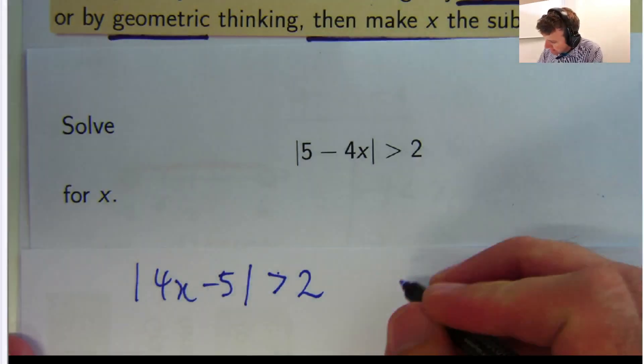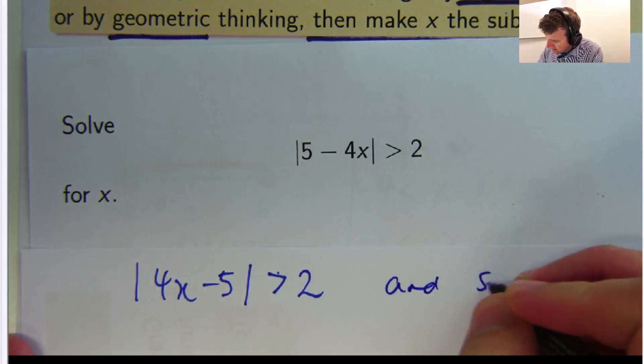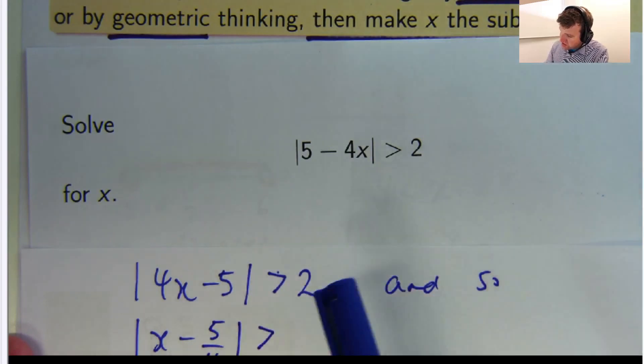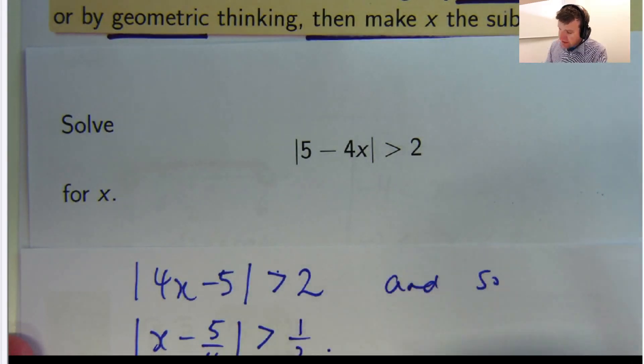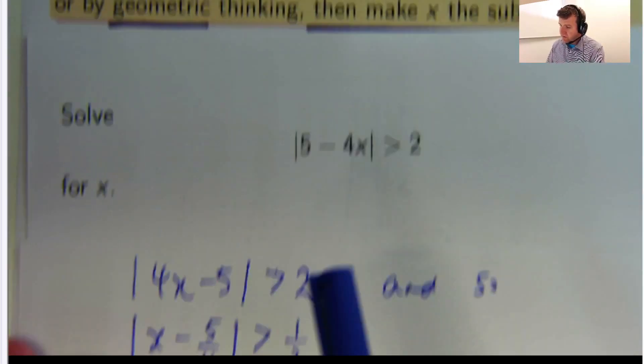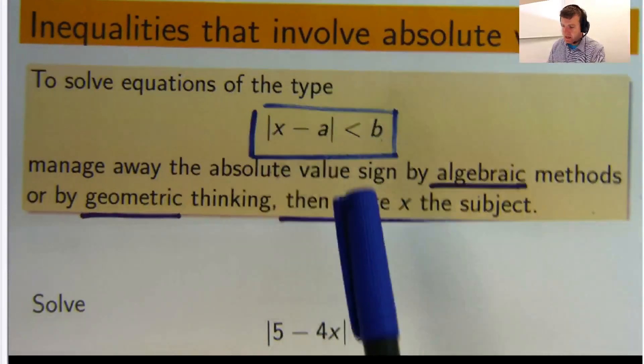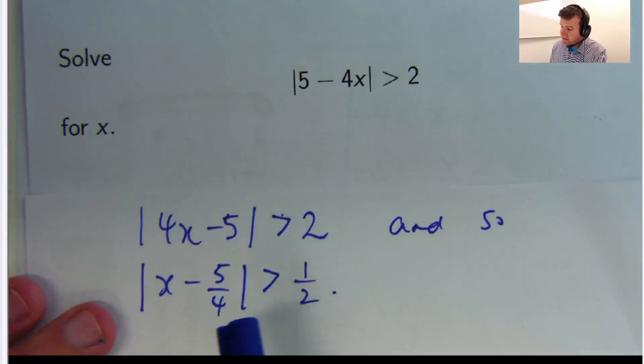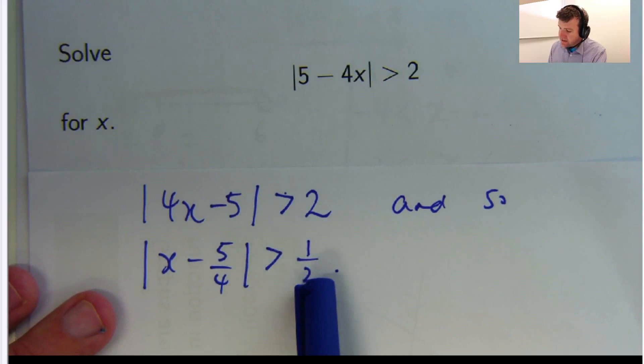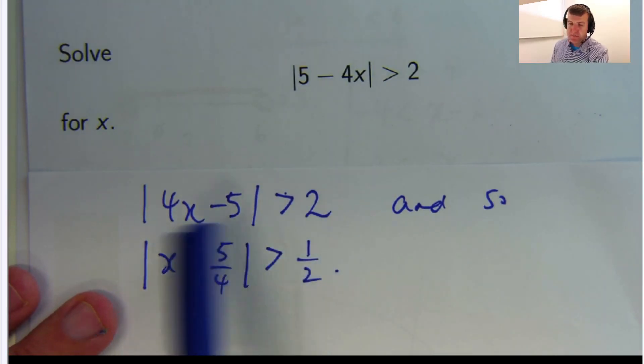Okay, so in this example, let's write it in this way and then we'll manage away the 4. So divide everything by 4. So 2 divided by 4 will give you a half. So now, you can see this is kind of like what we had up here. Alright, so what does this mean? This means we're looking for the x points that are greater than one half of a unit away from the number 5 on 4.